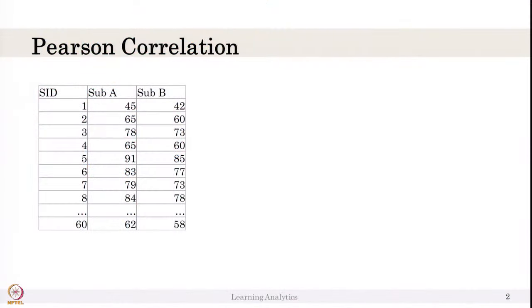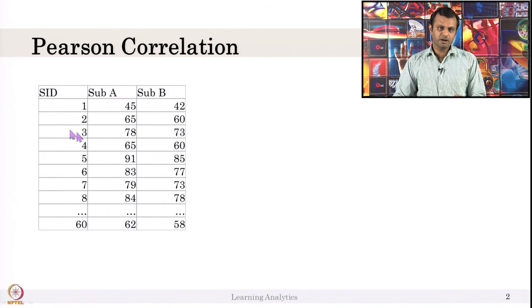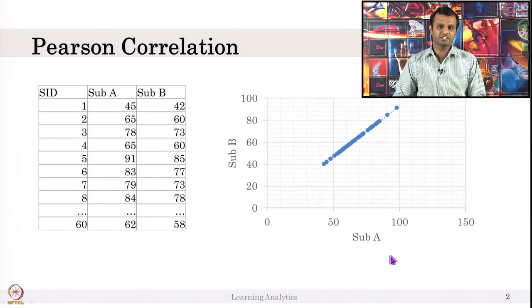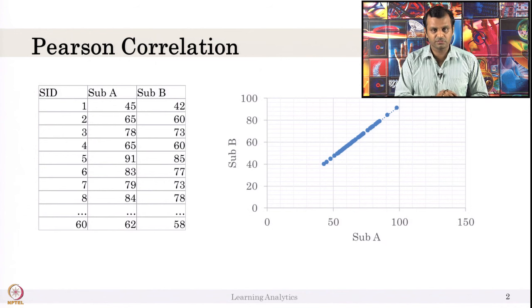In this video, we will talk about correlation matrix using Pearson correlation coefficient. If you remember, we discussed students' marks in subject A and subject B — we used a bar chart or box plot to compare these in descriptive analytics. Let us look at the same data. We have 60 students' marks in subject A and subject B for the same students, and we can plot the relationship between them. You see that a student who scores good in subject A definitely scores good in subject B. I created this marks data with a linear relationship: 0.93 times subject A.